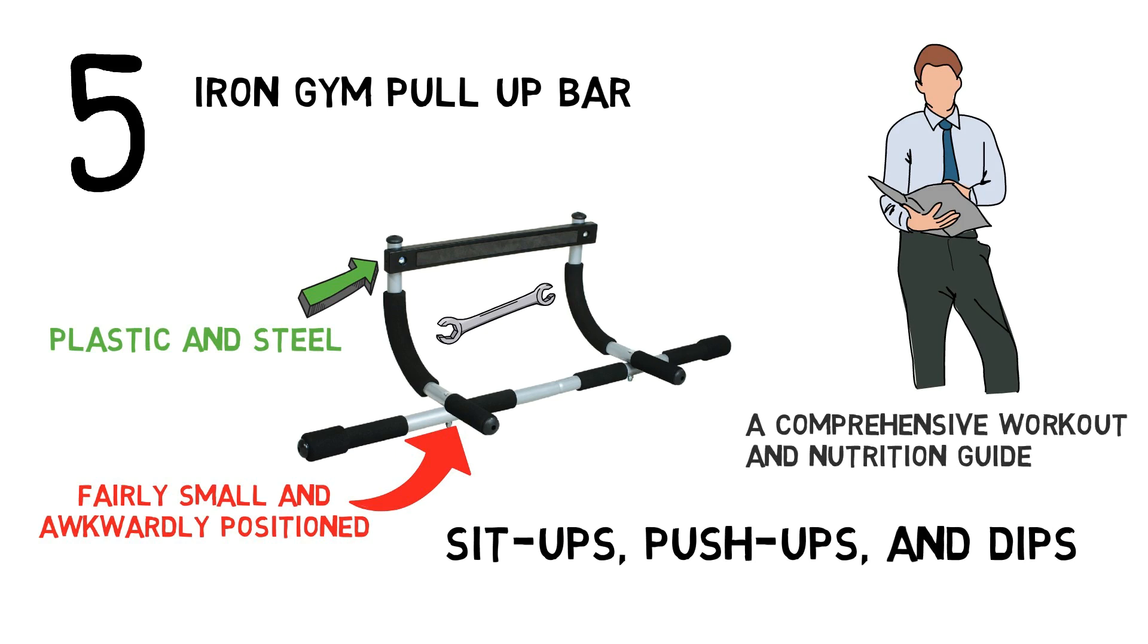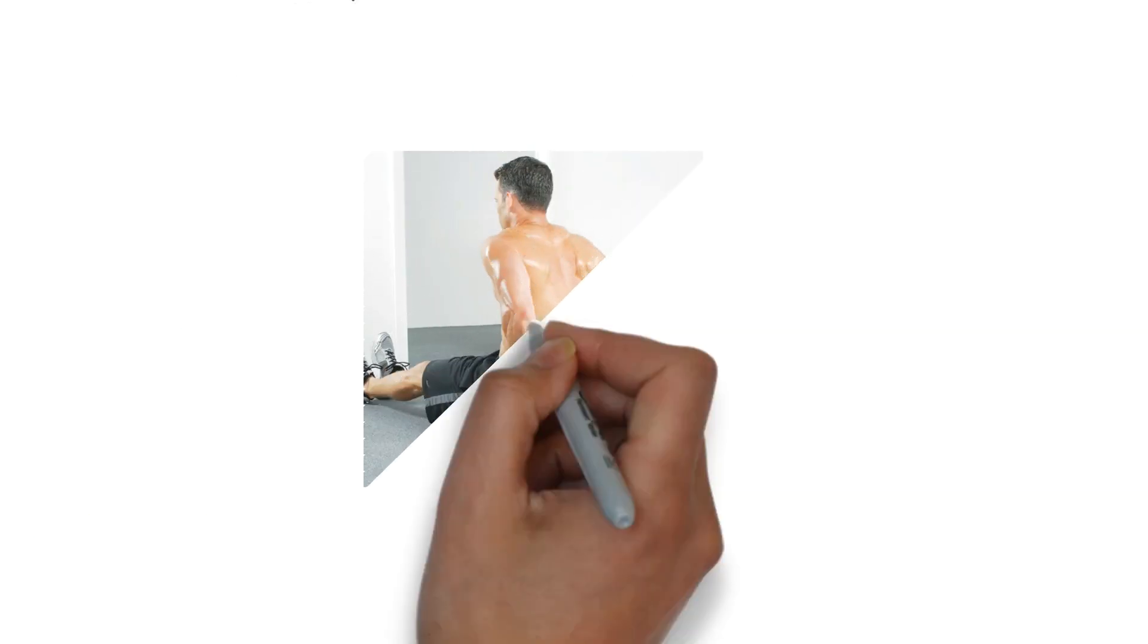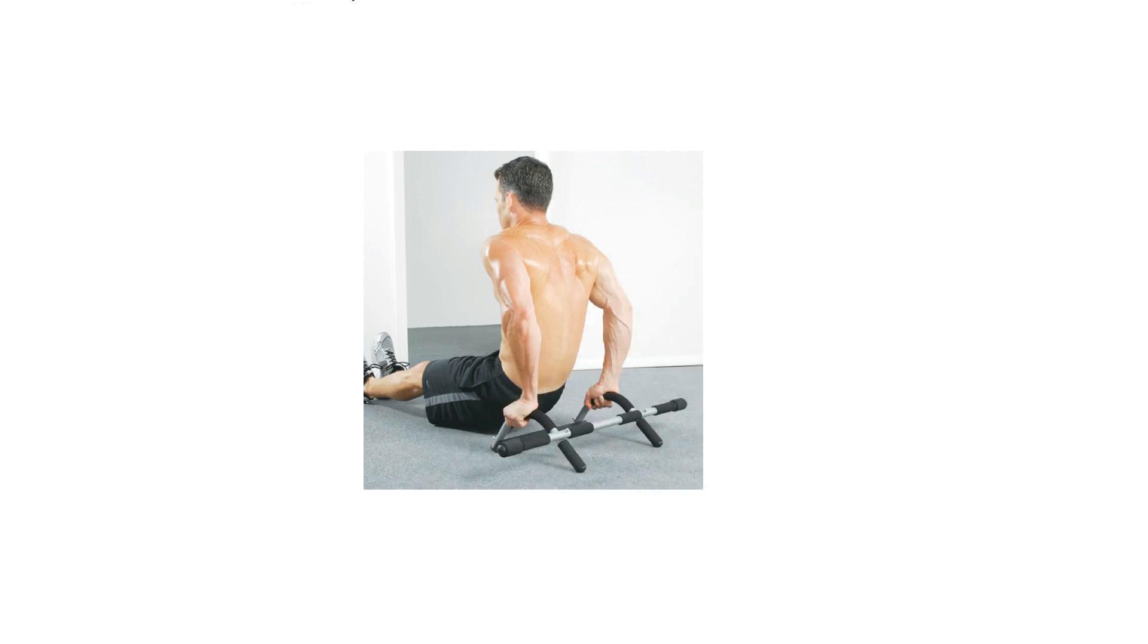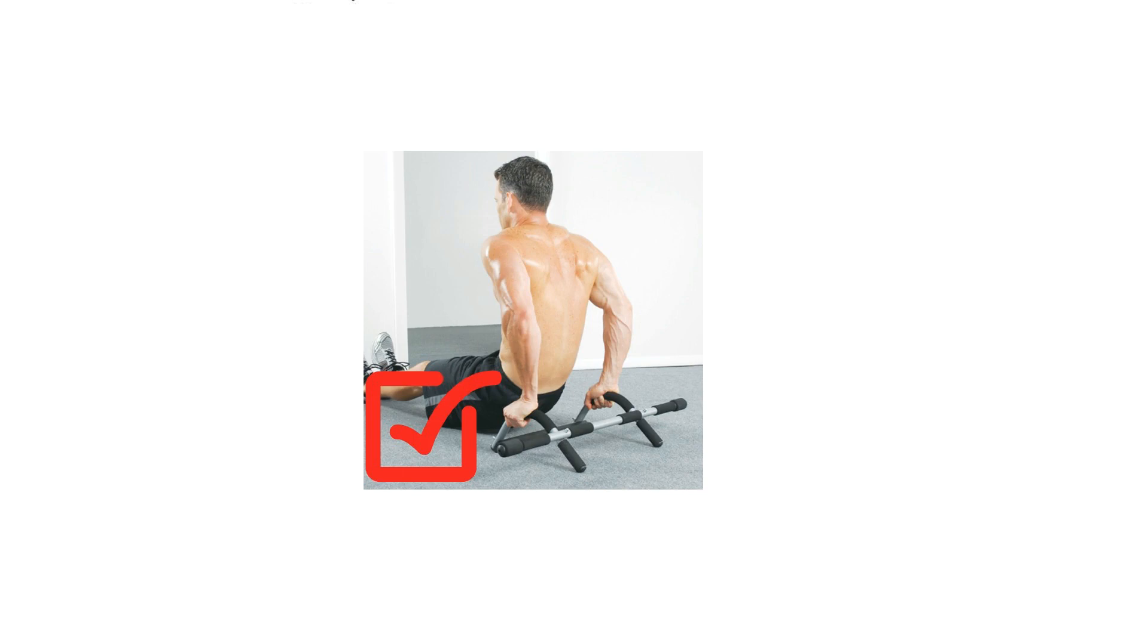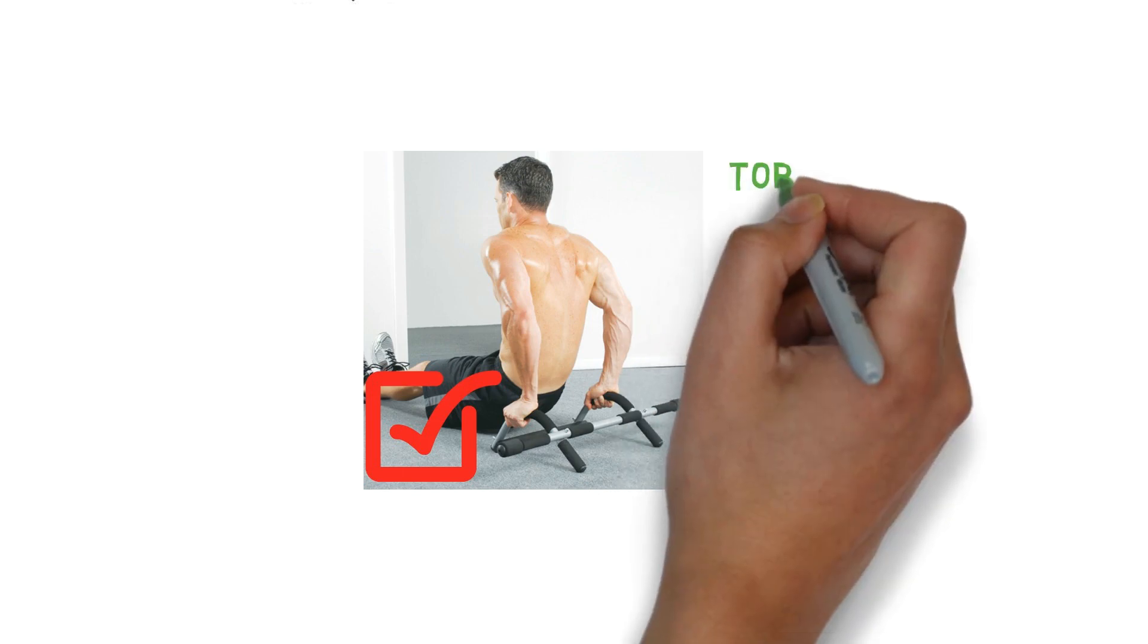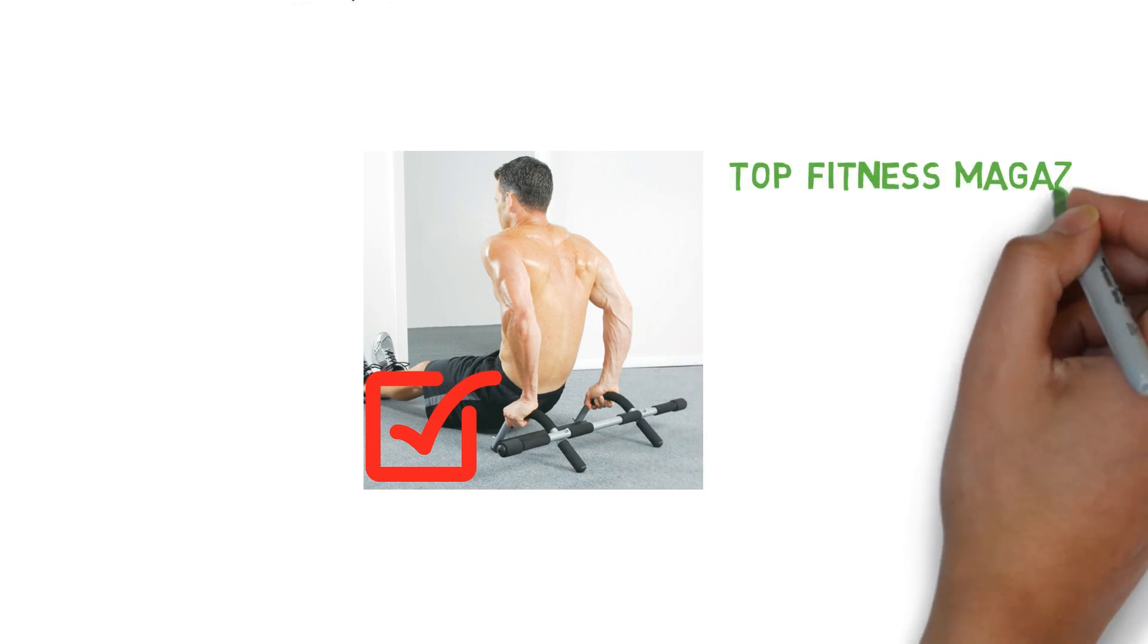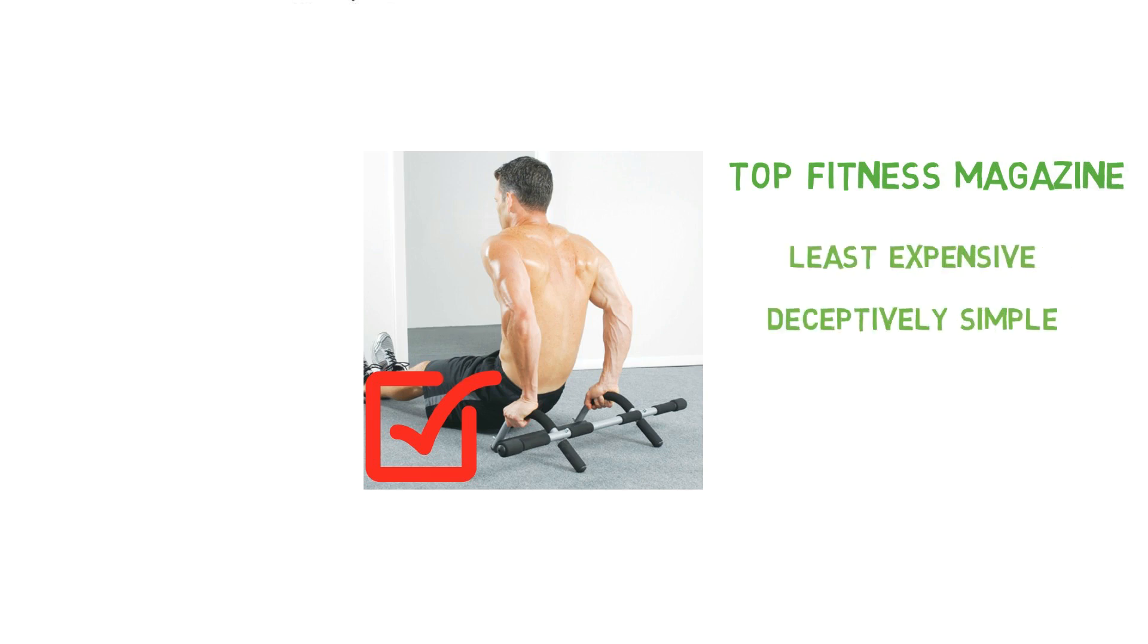Livestrong provided a pretty even-handed review of the Iron Gym Pull-Up Bar. The reviewer liked the price, the push-up handles, and the simple leverage mount but was not impressed with the limited range of motion when doing dips and the potential for marking up your doorframe. Top Fitness Magazine called this model one of the least expensive, deceptively simple, yet highly powerful pieces of exercise equipment you can buy.